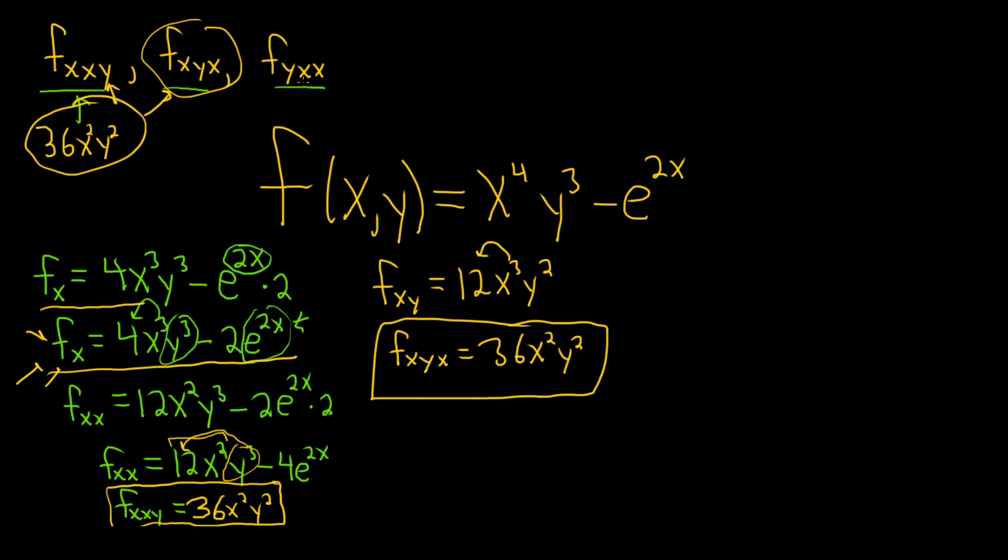And now we have to do this one. So to do this one, we first have to compute the partial with respect to y, which we actually haven't done. So let's go ahead and do that. So finding the partial with respect to y of the original function. The x's are constants. So we bring down the 3. So we get 3x to the 4th y squared. And the beautiful thing is the derivative of this bad boy is 0 because it only relies on x. It only depends on x. So it's a constant. So it's 0.